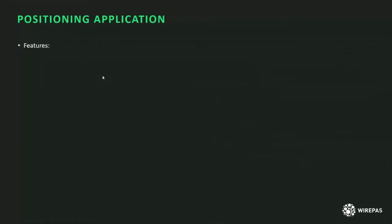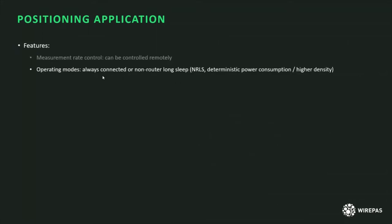Now, briefly about the positioning application features. First, we can control the measurement rate, and importantly this can be controlled remotely from the backend by changing the configuration, so that tags can dynamically adapt their measurement rate depending on various conditions. There are two main operating modes: one we call always-connected, where the tag is continuously connected to the mesh and will try to reconnect if the connection drops due to movement; and a second mode called non-router long sleep, which provides more deterministic power consumption and slightly higher tag density.